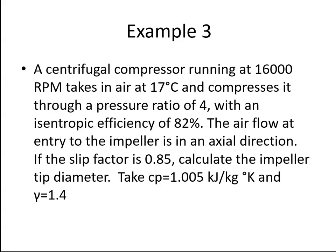A centrifugal compressor running at 16,000 RPM takes in air at 17 degrees Celsius and compresses it through a pressure ratio of 4, with an isentropic efficiency of 82%.